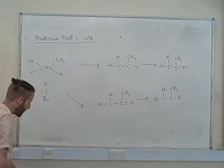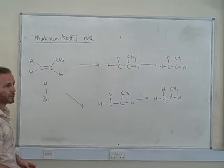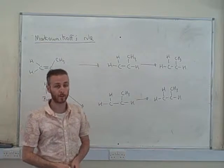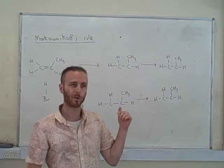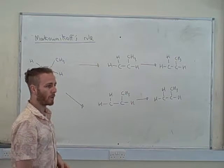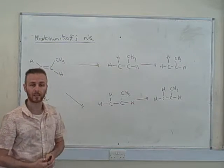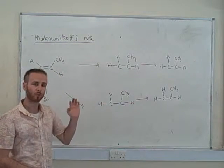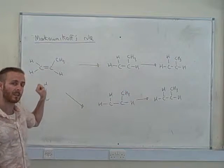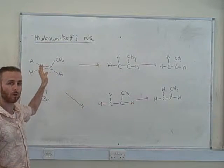This is Markovnikov's rule, and this basically talks about - well, it's not just the electrophilic addition of alkenes, but I'm going to apply it to that context today. When we do the electrophilic addition of alkenes, we get two possible products if we start with an unsymmetrical alkene.